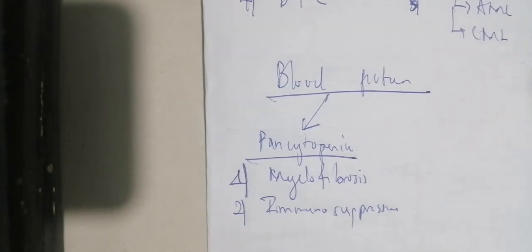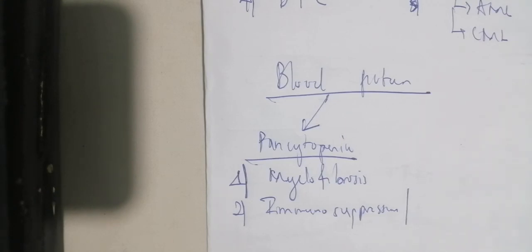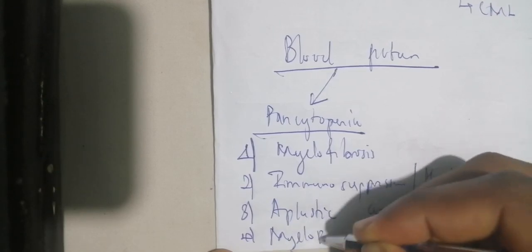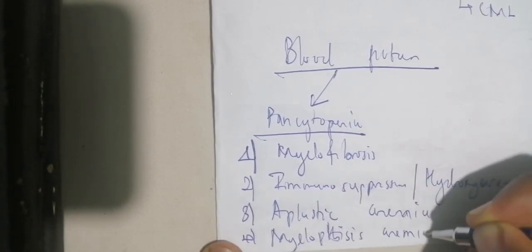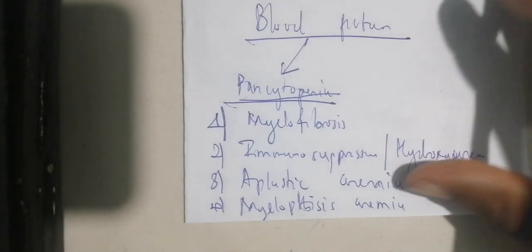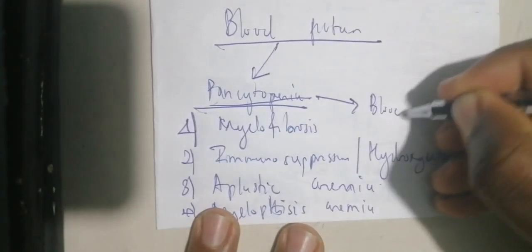The second cause of pancytopenia is immunosuppression therapy, which can destroy the bone marrow. Other conditions that result in bone marrow suppression include hydroxyurea use. Aplastic anemia is another cause, which can also occur as a complication in sickle cell patients. Myelophthisis anemia is another cause, where metastasis of cancer cells into the bone marrow compresses and impairs bone marrow function, resulting in pancytopenia.